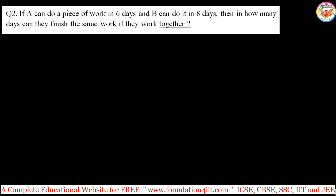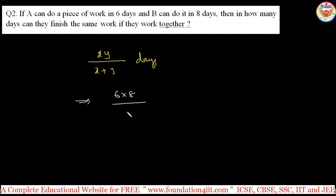Another type — these also have a shortcut. If A can do a piece of work in 6 days and B can do it in 8 days, how many days can they finish the same work if they work together? Instead of taking 1/6 and 1/8 for work done per day, you can use the direct formula: (x × y) / (x + y) days, where x is A's days and y is B's days. So, (6 × 8) / (6 + 8) = 48 / 14.